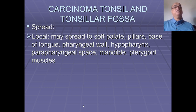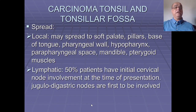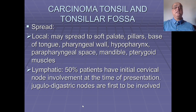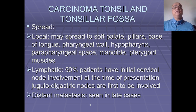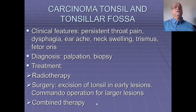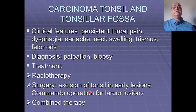Advanced tonsillar lesions can penetrate the parapharyngeal space, skull base, involve the mandible, nasopharynx, and pyriform fossa. Spread can involve the soft palate, pillars, base of tongue, pharyngeal wall, hypopharynx, parapharyngeal space, mandible, and pterygoid muscles. In 50% of patients there is initial cervical lymph node involvement at presentation; jugulo-digastric lymph nodes are the first involved. Symptoms include persistent throat pain, dysphagia, earache, neck swelling, trismus, and foetor oris.